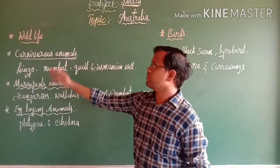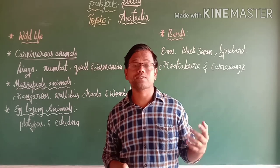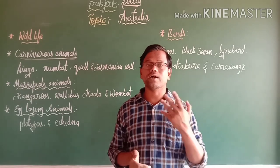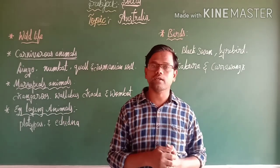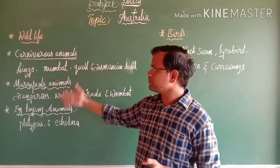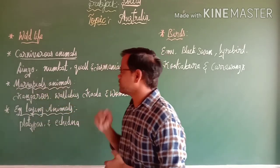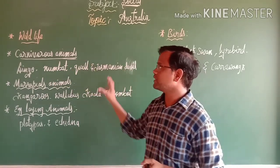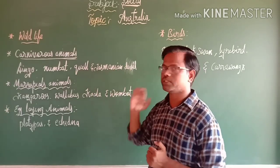Next, the wildlife of Australia continent is very strange and unique, with a great variety of birds and animals. The overall wildlife is divided into three parts: carnivorous animals, marsupial animals, and egg-laying animals. Carnivorous animals include dingo, numbat, quail, and Tasmanian devil.